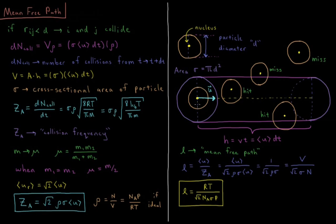Say we have one particle with velocity u and its effective radius shown as an orange circle. If the center of another particle is inside the volume we're sweeping out as we move — which extends to twice the radius of the particle — then this moving particle will collide with it. If the other particle's nucleus is outside this volume, the particles miss each other; inside, they collide.